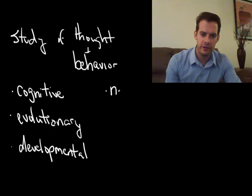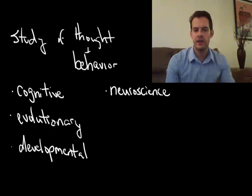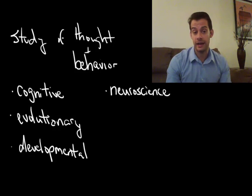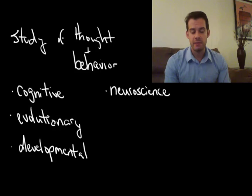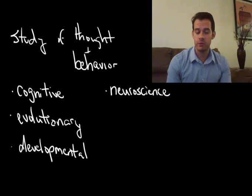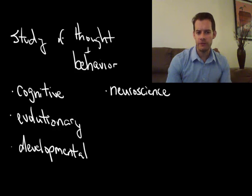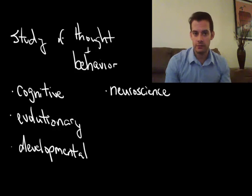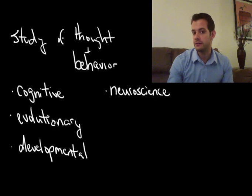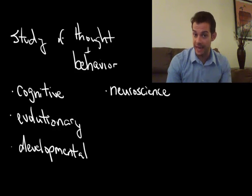Then we have neuroscience. And neuroscience is focused on studying the brain and brain activity. Now this might be connected to our thinking, so we might look for patterns of brain activity and how they connect to thought, and that would fall under cognitive neuroscience. Or we might focus on the relationship between brain activity and behavior, and that would be considered behavioral neuroscience.